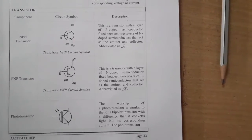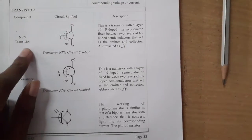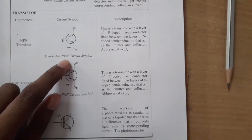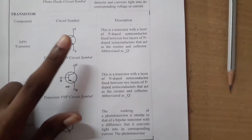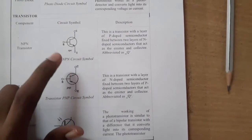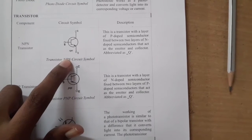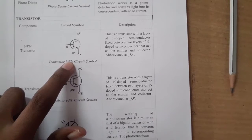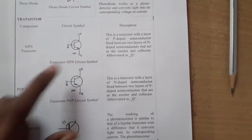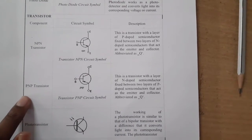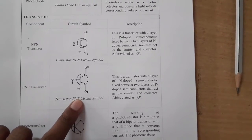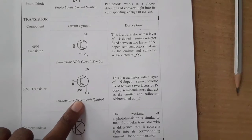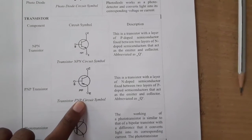We have transistors and types of transistors. First is NPN — this is the circuit symbol. Transistors have three terminals: collector, base, and emitter. NPN transistors have a P-type semiconductor sandwiched between two N-type semiconductors. Second is PNP transistors — this is the symbol. PNP transistors have an N-type semiconductor sandwiched between two P-type semiconductors.